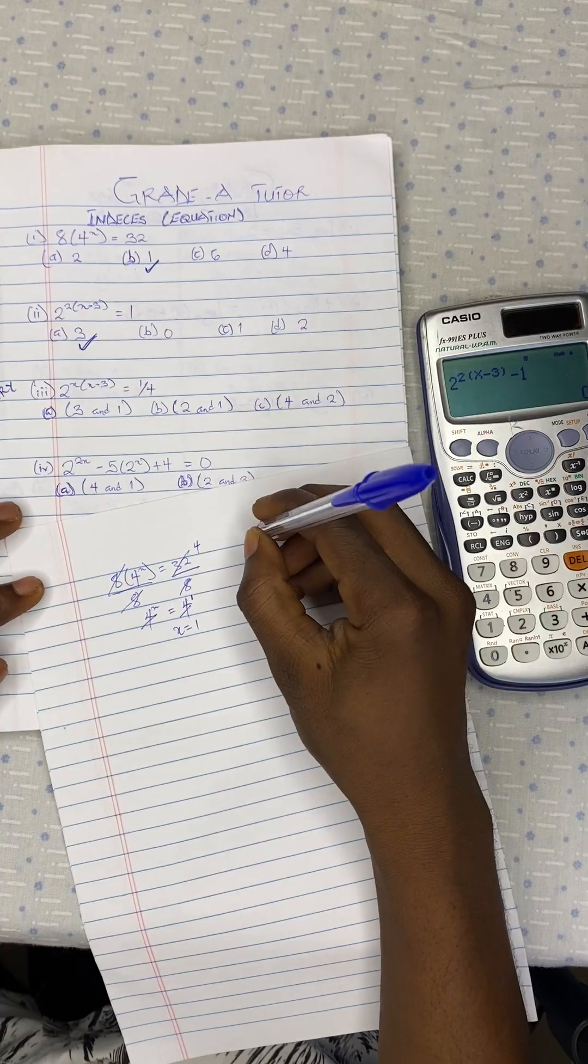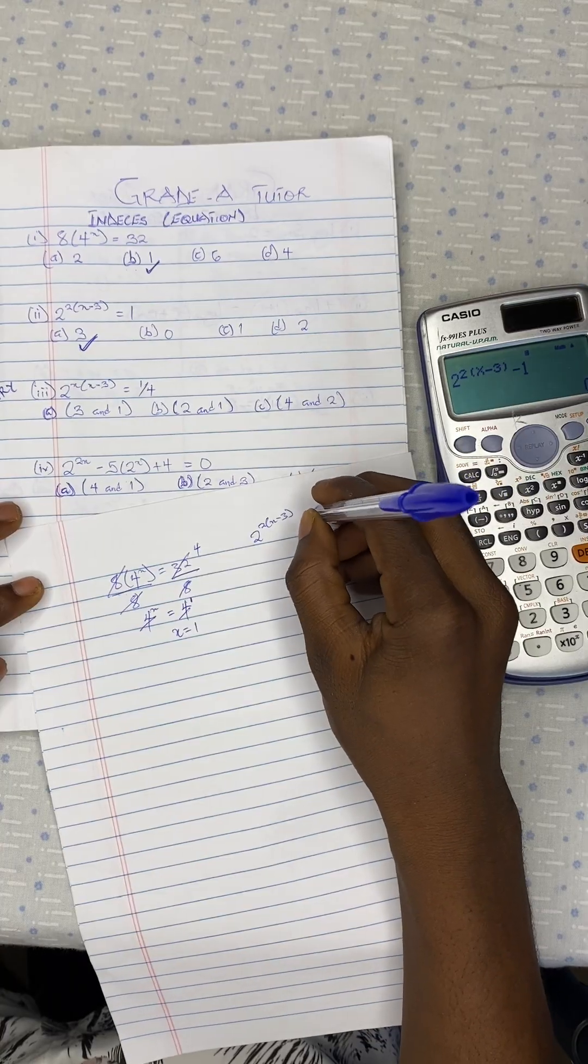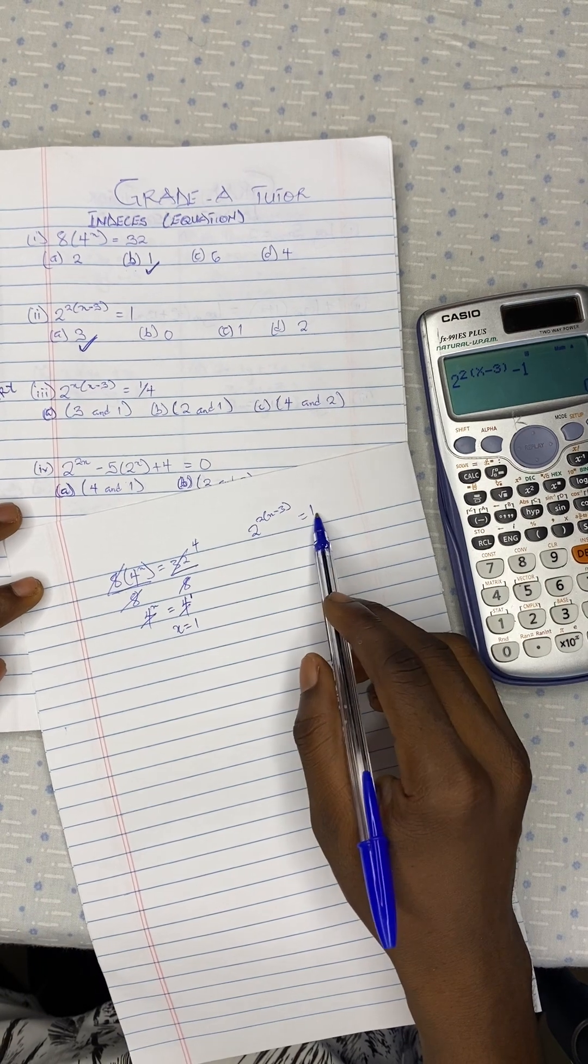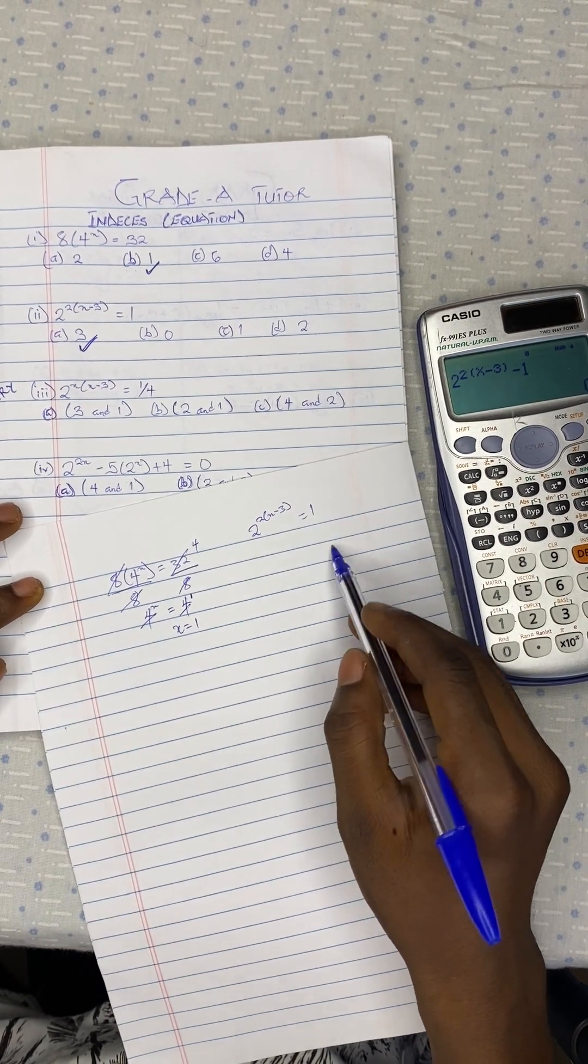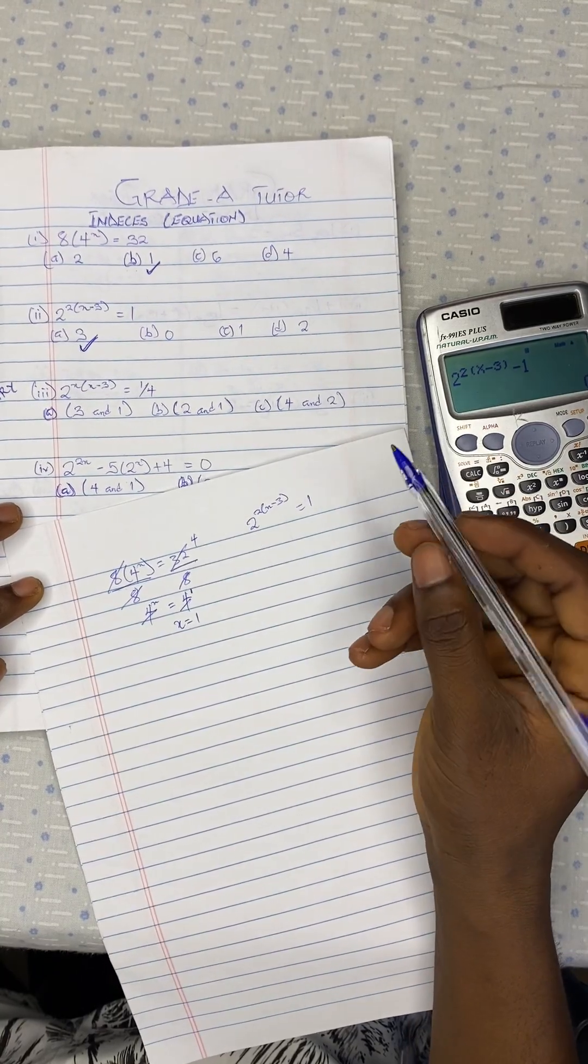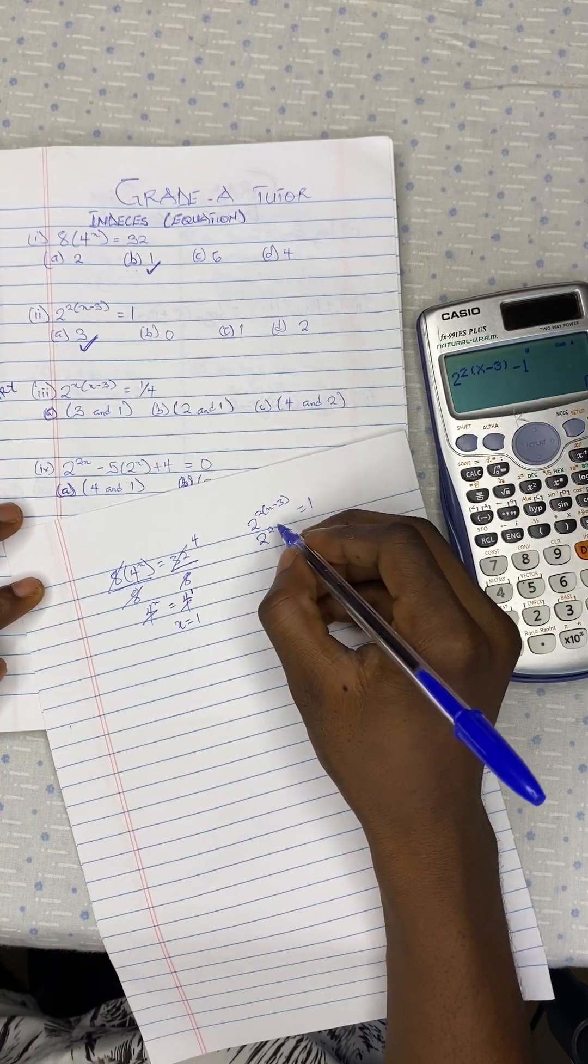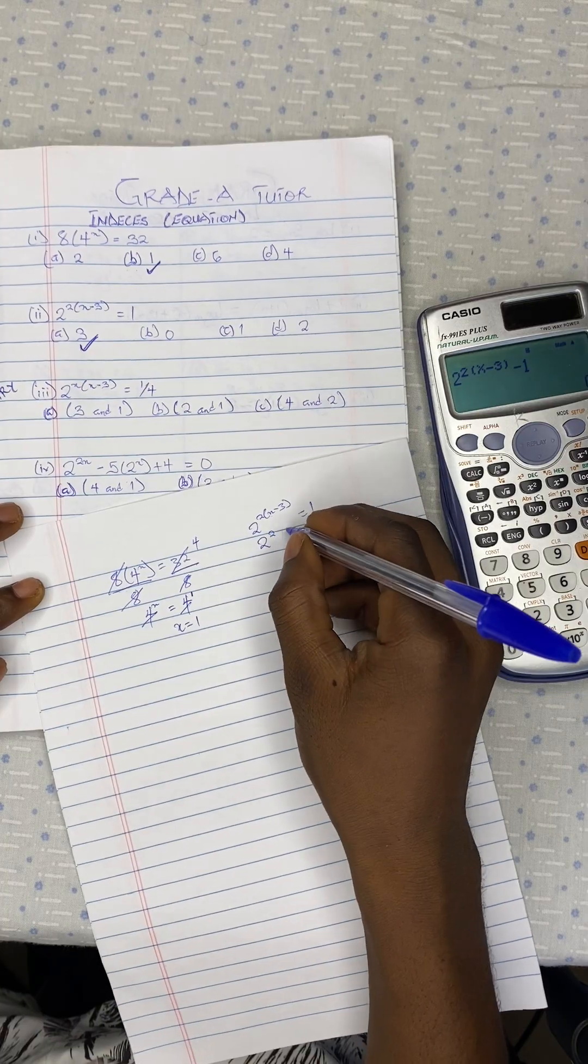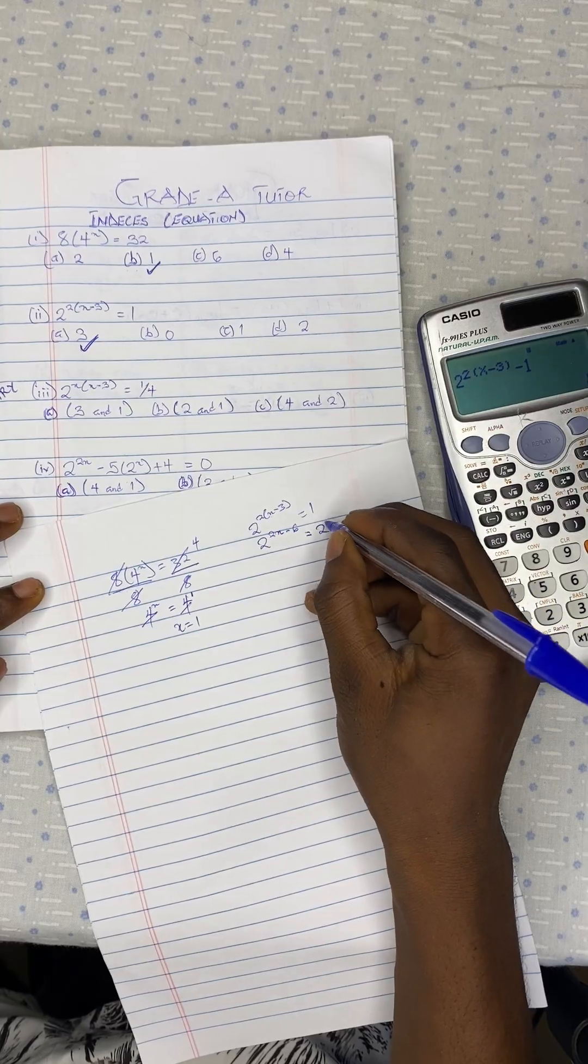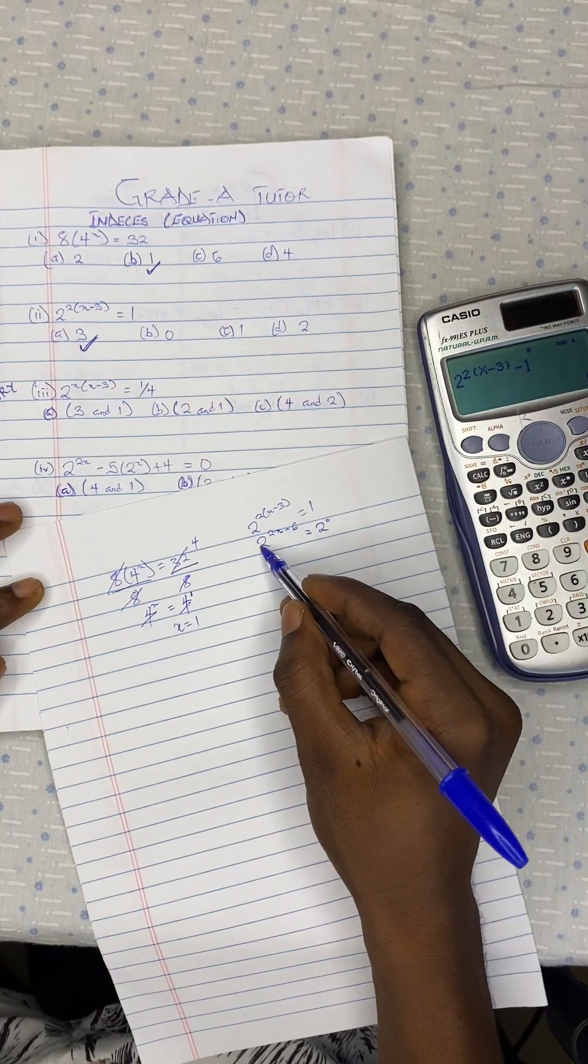In order to also solve it, you have 2 exponent 2 bracket open x minus 3 equal to 1. So this one, you need to make the basis the same so that you pick the exponent. And you know any number exponent 0 is equal to 1. So we see 2 exponent 2. Let's expand the brackets here so that we will get 2x minus 6 equal to, now this one can be 2 exponent 0. Because any number exponent 0 is 1. Now that the basis are the same, we cancel them and we pick the exponent.